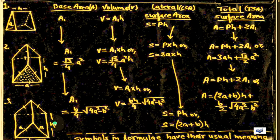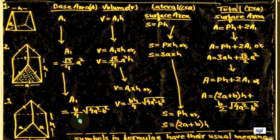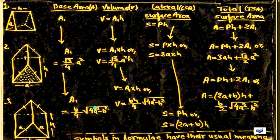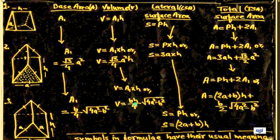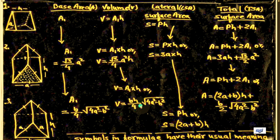In the third figure, this is also a figure of a prism with an isosceles triangle base. Area = B upon 4 times root under (4a squared minus b squared). This is the formula to find the base area of this given prism. Volume V = A1 into H, or V = B into H upon 4 times root under (4a squared minus b squared). This is the formula for finding the volume of a prism having an isosceles triangle base.